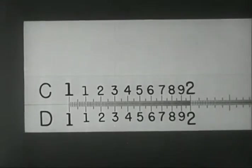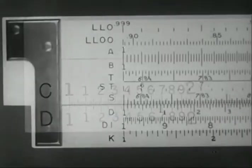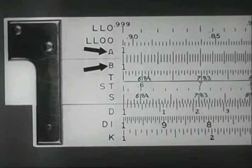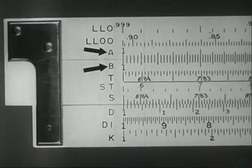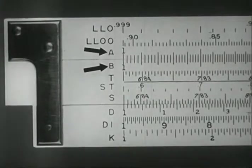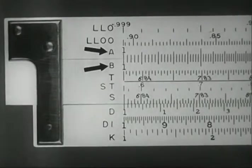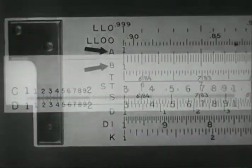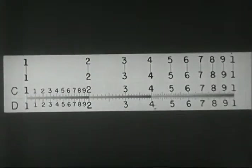The C and D scales, together with two others, the A and B scales, are used to obtain squares and square roots. The A and B scales are made as though the C and D scales were contracted to half their length and repeated.